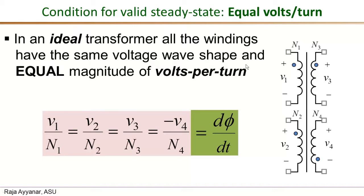More importantly, all of the windings have equal magnitude of volts per turn. We're not saying they all have the same magnitude of voltage — what we're saying is the volts per turn, that is V1 divided by n1, equals V2 divided by n2, equals V3 divided by n3, and so on. There is a minus sign for one winding because of the dot polarity, where the undotted end is assigned positive polarity.